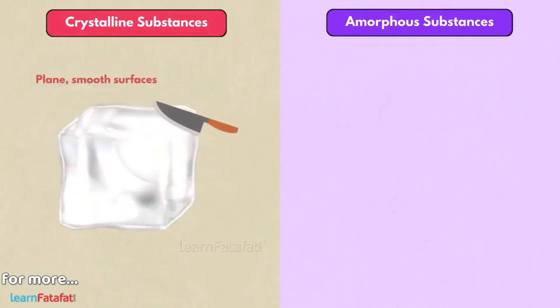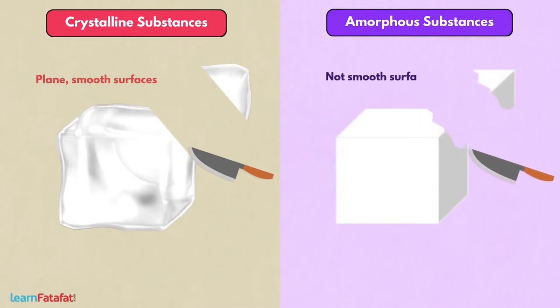If we cut crystalline substance, then it forms plain smooth surface. However, there is no smooth cut in amorphous substance and so surfaces are not smooth.